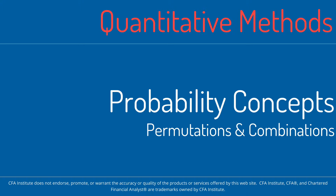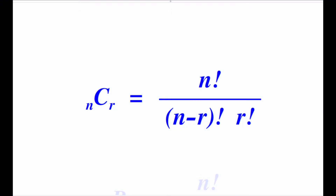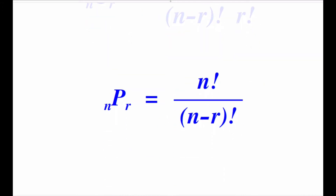Just a quick recap before we get started. When you come across a counting type of problem, there are three basic questions to ask yourself. First, if you're trying to distribute a group of size n across the same number n of slots, then you use n factorial. If you want to count the number of ways of choosing r objects from a total of n objects where the order of listing does not matter, you use the combination formula. And finally, for the same case where the order of listing does matter, you use the permutation formula.